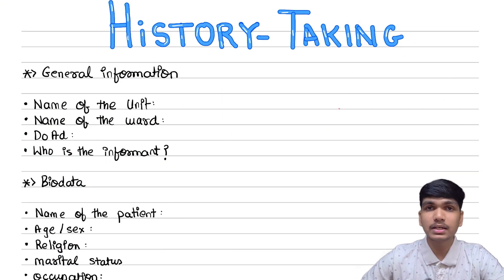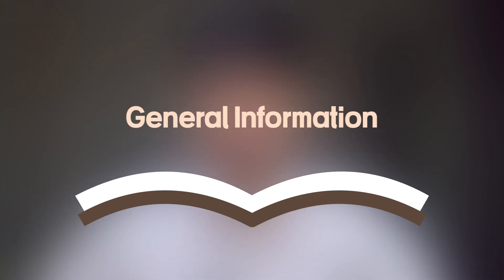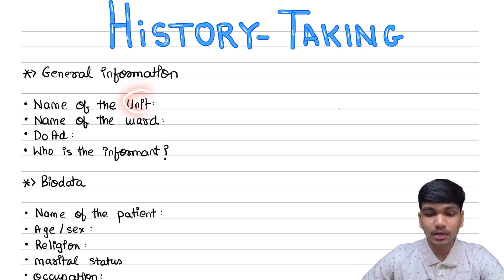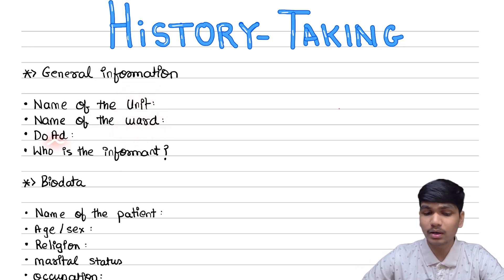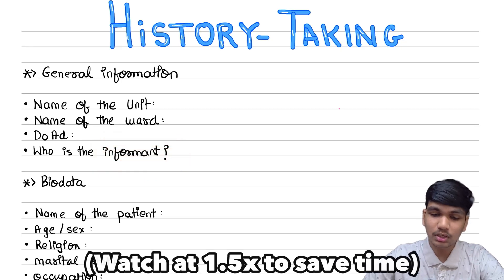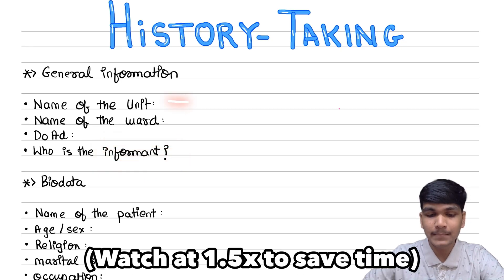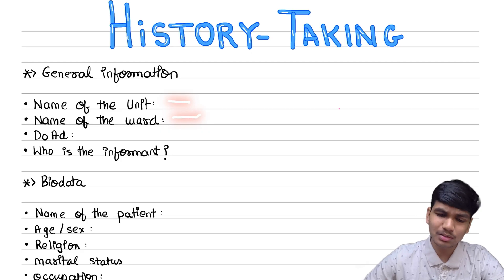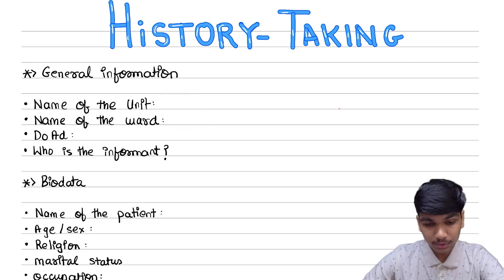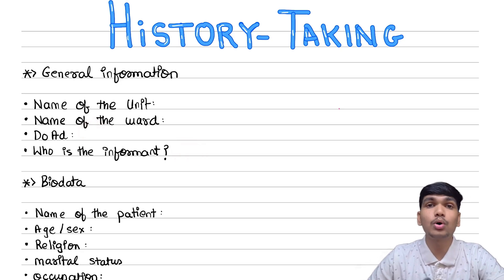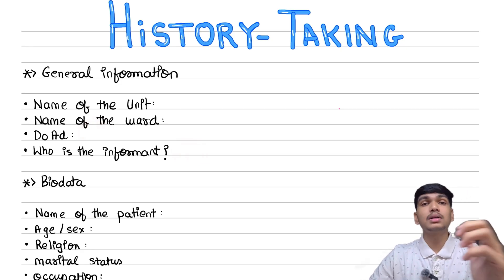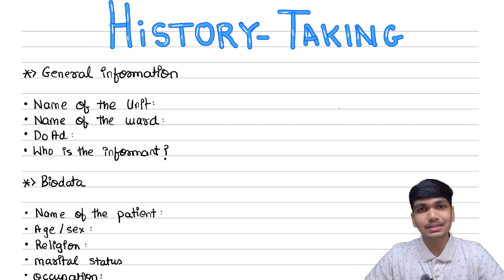While history taking, we should first focus on the general information. What is the name of the unit? What is the name of the ward you are posted in? What is the date of admission of the patient and who is the informant? Say for example, I am posted in surgery unit C — I will write the name of the ward, male surgery ward 1 or female surgery ward 1, date of admission of the patient, and who is the informant. The informant can be either the patient or a relative — mention the relation and their name.